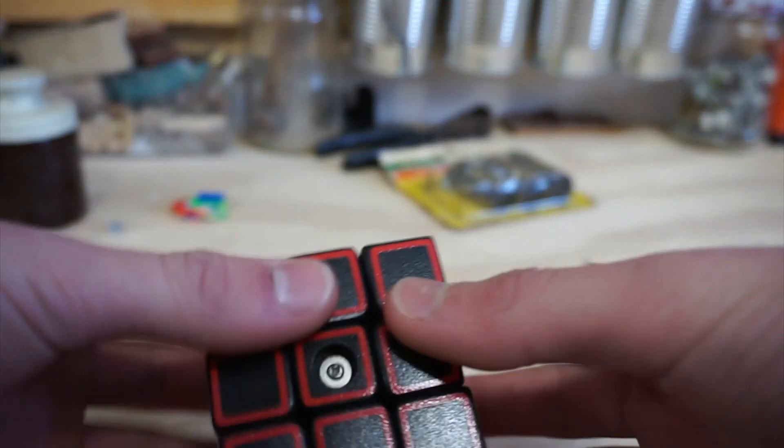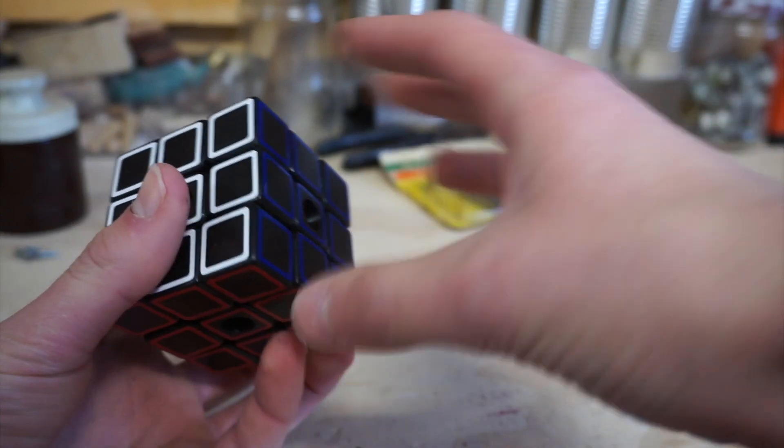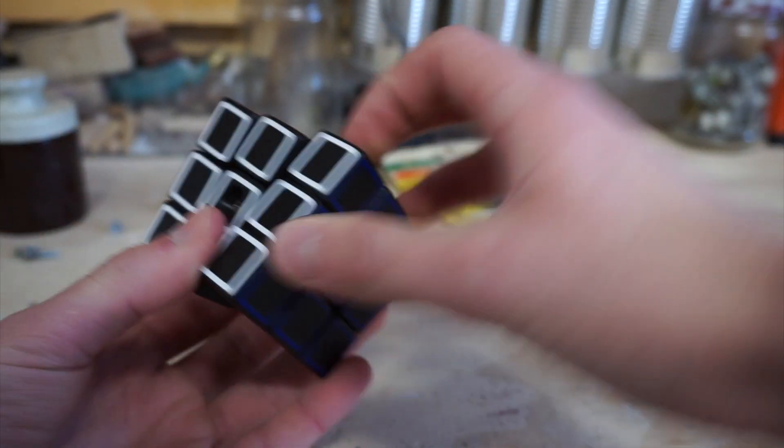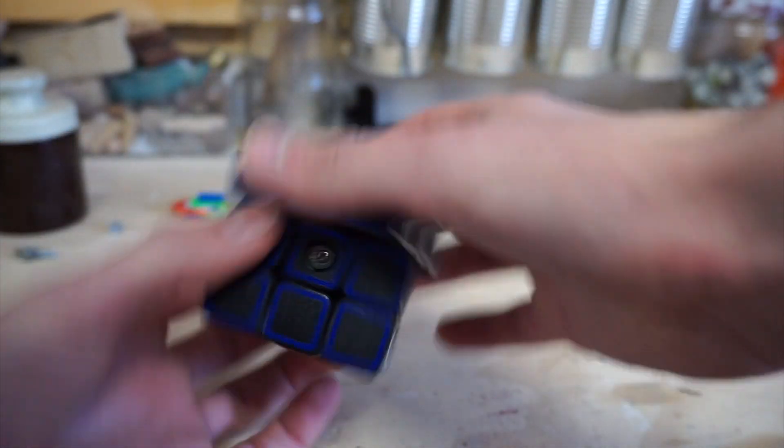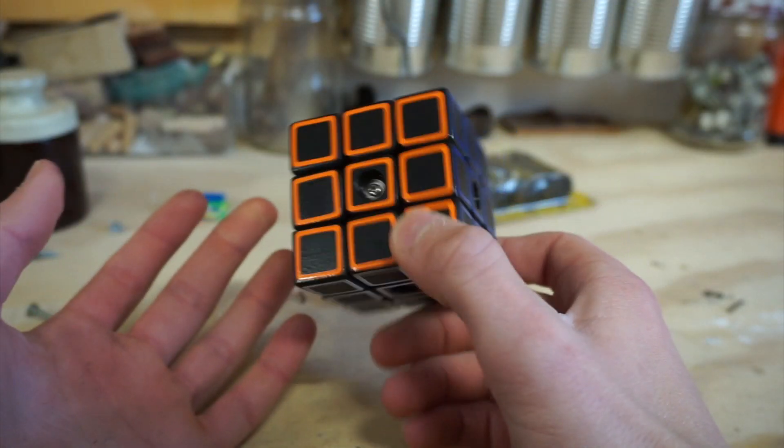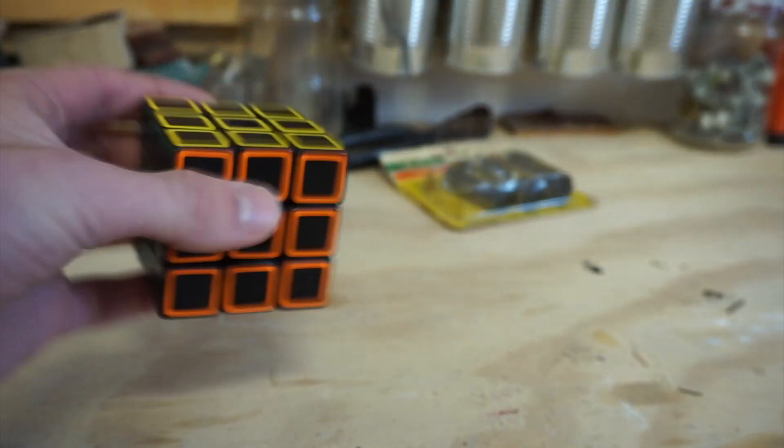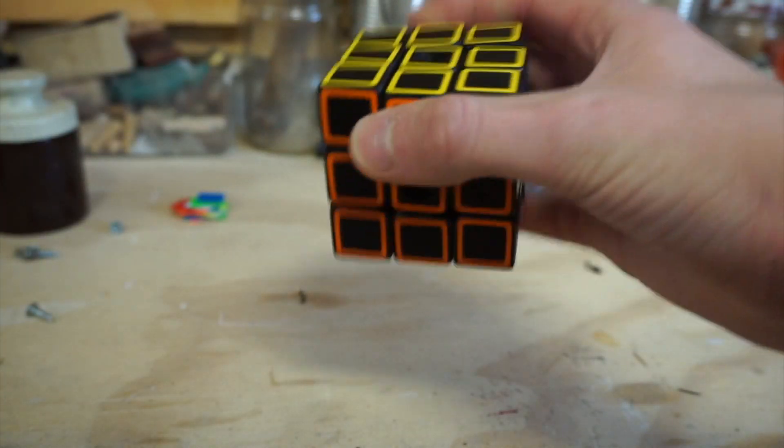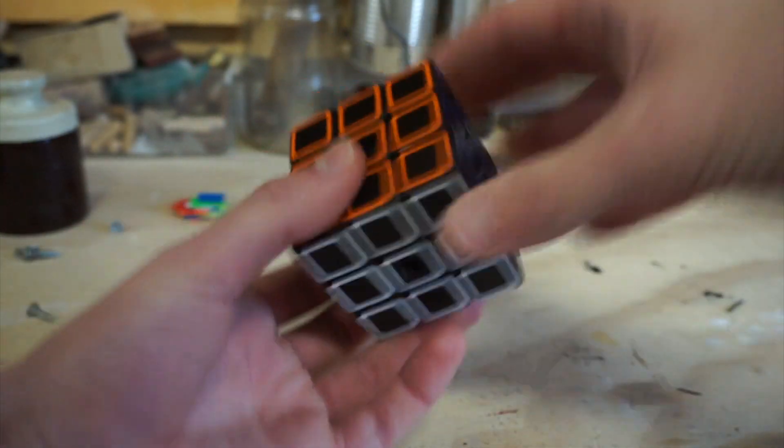This is an internally bandaged 3x3. Now you may be wondering what that means or how it affects how the puzzle turns, because this puzzle looks the same as a regular 3x3 other than the stickers.